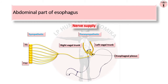Variation of vagal trunks is important during vagotomy. There may be more than one vagal trunk on both sides. A surgeon should be aware of these variations, because more than one branch can be found in the anterior or posterior vagal trunks, or both.